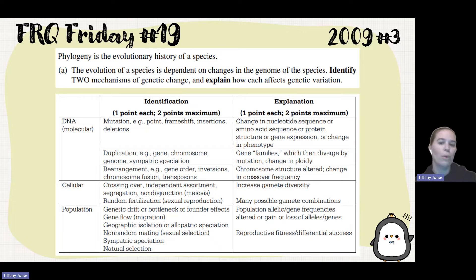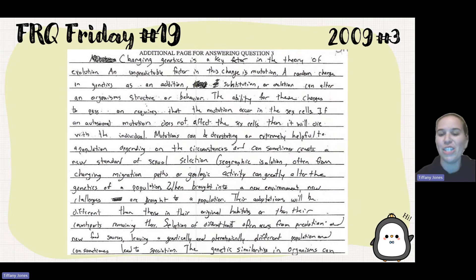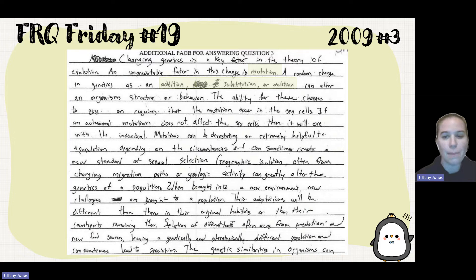So if you're mentioning one of those, you have credit. The student says: changing genetics is a key factor in the theory of evolution. An unpredictable driver of this change is mutation — a random change in the genetics as an addition, substitution, or deletion — which can alter an organism's structure or behavior. The ability for these changes to pass on requires that the mutation occur in the sex cells. If an autosomal mutation does not affect the sex cells, then it will die with the individual. Mutations can be devastating or extremely helpful to a population and can sometimes create a new standard of sexual selection.